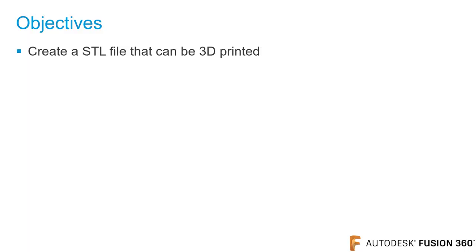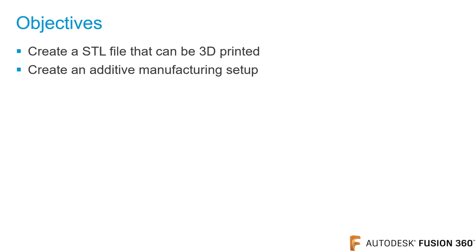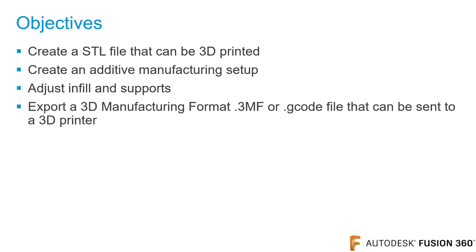In this video, you will learn how to create an STL file that can be 3D printed, create an additive manufacturing setup in the manufacturer workspace, adjust infills and supports, and export a 3D manufacturing format — a .3MF or a .gcode file that can be sent to a 3D printer.